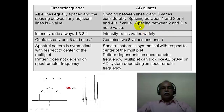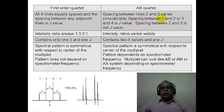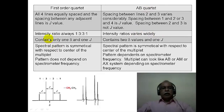So, one should not confuse between the second order AB quartet and a simple first order quartet. In the case of a first order quartet, all four lines are equally spaced and the spacing between any adjacent line is the J value. Whereas in the case of an AB quartet, the spacing between lines 2 and 3 will vary considerably — it depends upon the delta-delta divided by J ratio. Spacing between 1 and 2 or 3 and 4 is the J value, but spacing between 2 and 3 is not a J value, and that is very important to recognize.